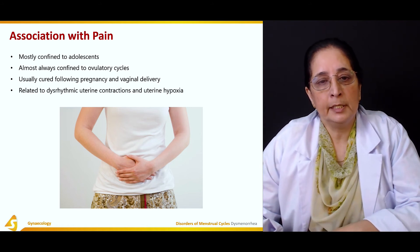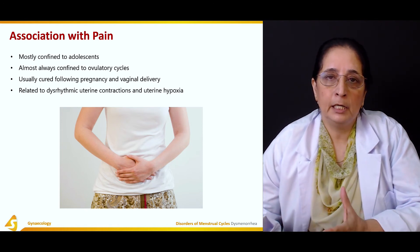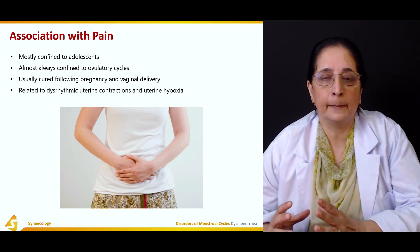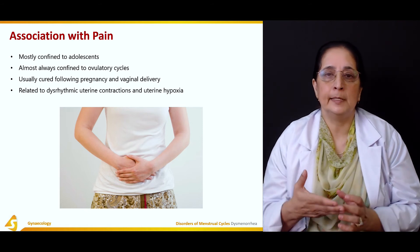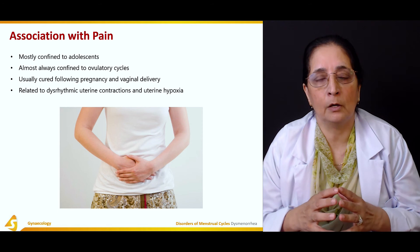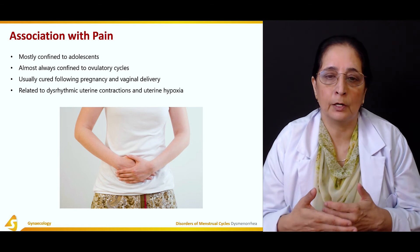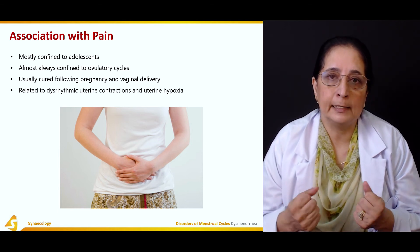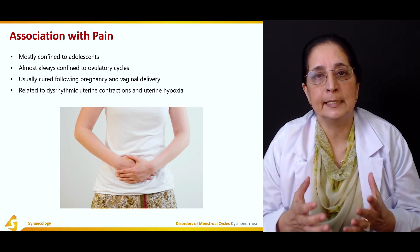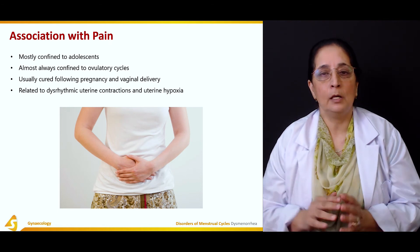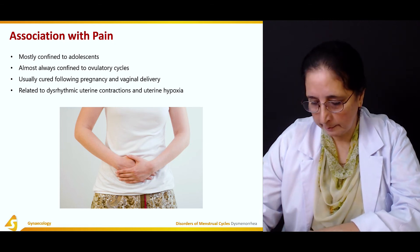Primary dysmenorrhea is related to dysrhythmic uterine contraction and uterine hypoxia. The reason for this pain is uterine contraction — as mentioned, there is a release of prostaglandins, and those prostaglandins cause uterine contraction and uterine congestion, which leads to hypoxia. Hypoxia is decreased supply of oxygen. All these factors can lead to pain during the menstrual cycle.